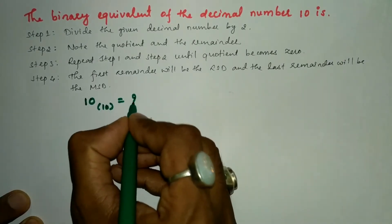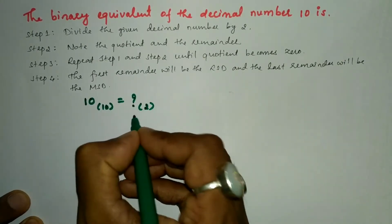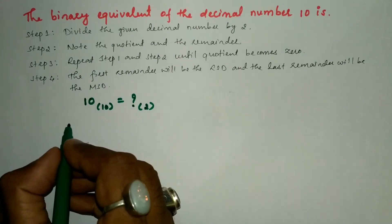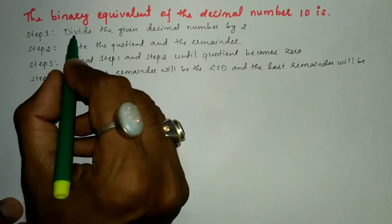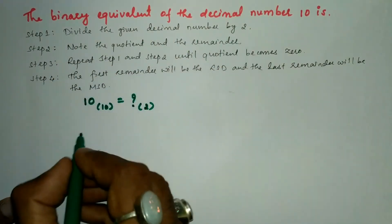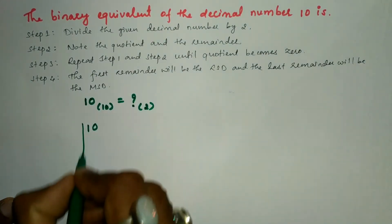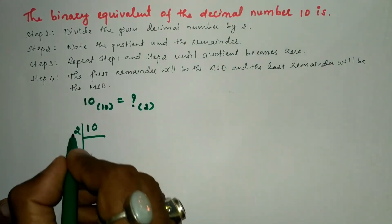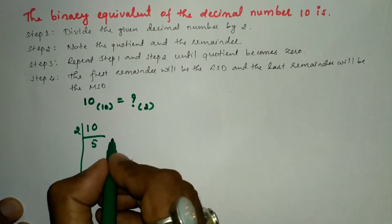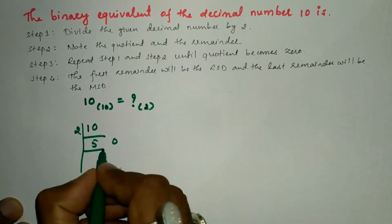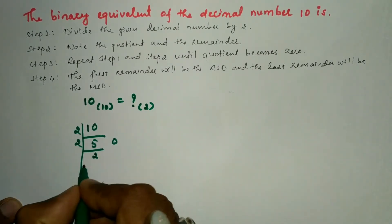Here, decimal number 10 to the base 10 is equal to what in base 2? Following step one, we divide the given decimal number 10 by 2. 2 times 5 is 10, so the remainder is 0. Next, 5 divided by 2: 2 times 2 is 4, remainder is 1.